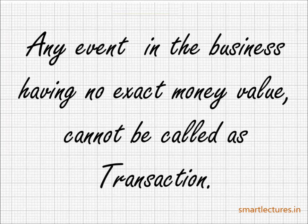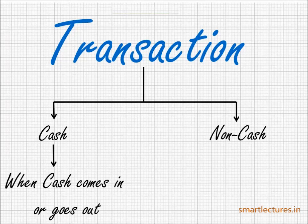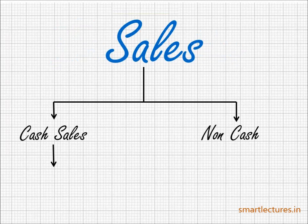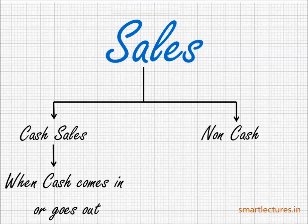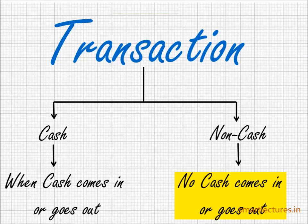Now all these transactions are of two types: cash or non-cash — that is, cash transactions or non-cash transactions. Cash transactions are those transactions when cash comes in or goes out. For example, cash sales: when you sell the goods to the customer and he gives you cash, you have received cash — these are cash transactions because cash is involved. But in non-cash transactions, the transaction is done but the cash doesn't move — it doesn't come in and it doesn't go out.